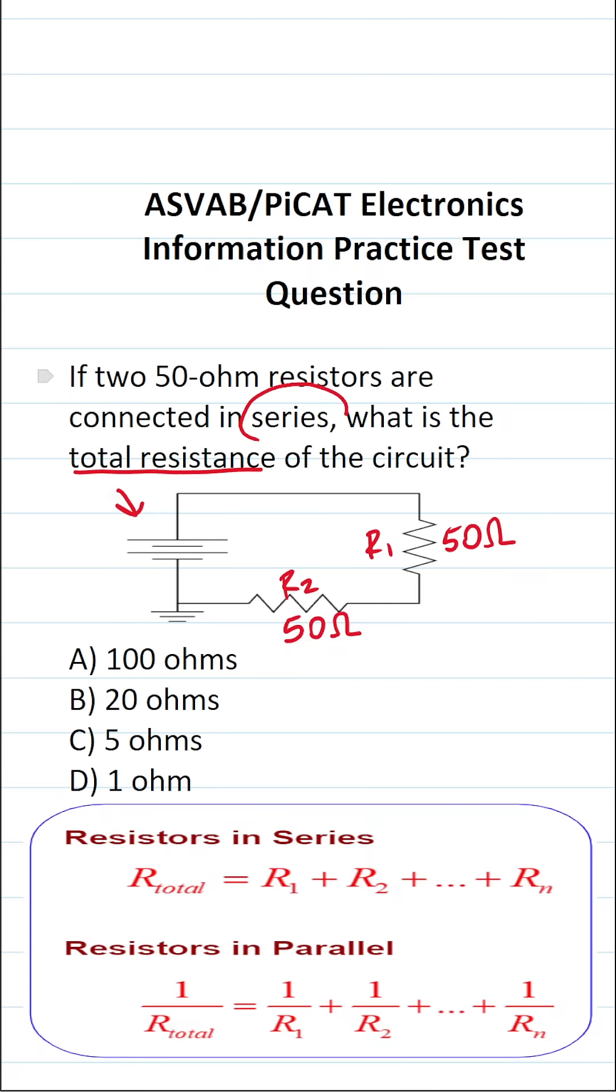In this case, we know that our resistors are in series, so we're going to calculate our total resistance using this formula. If this said the resistors were in parallel, or if we looked at the diagram and saw that it was in parallel, we would use this formula down here.